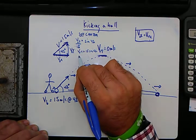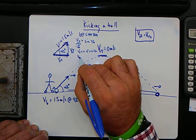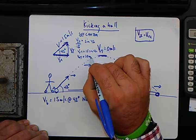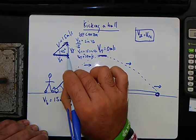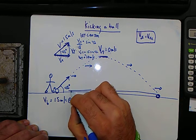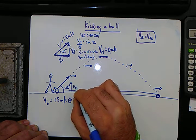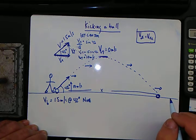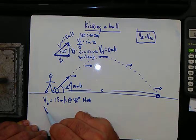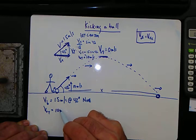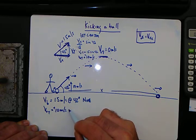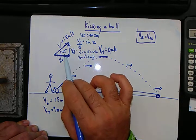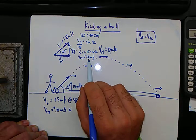So initial velocity, V0Y, is 15 sine 42, or 10 meters per second. So this ball is rising, starting to rise at 10 meters per second up. We know that. So let's write it down. V naught y is 10 meters per second. You can even write north if you wanted to. So we found that out. The x one uses the adjacent and hypotenuse. So let's apply that same thing to there.